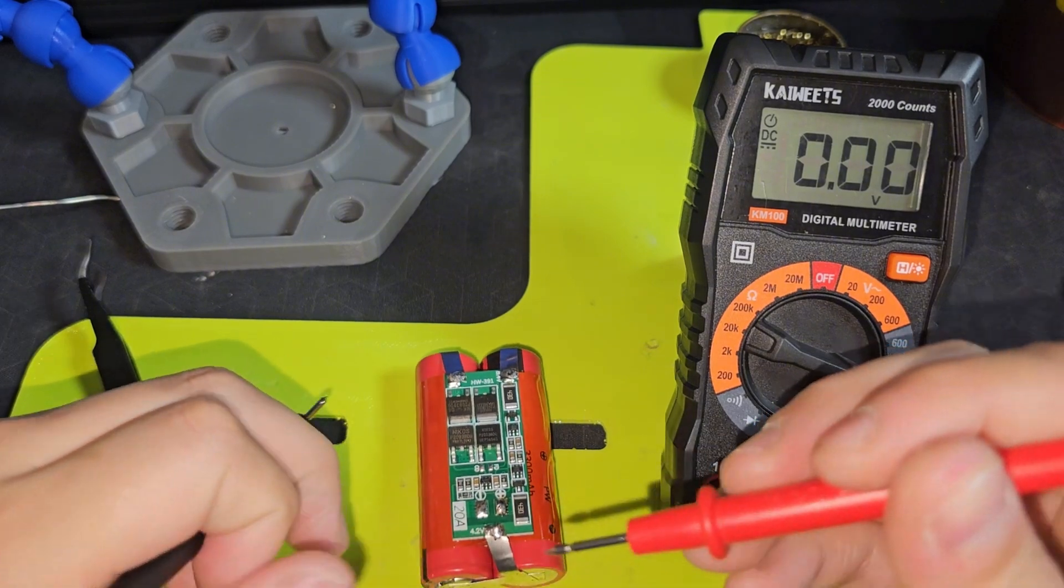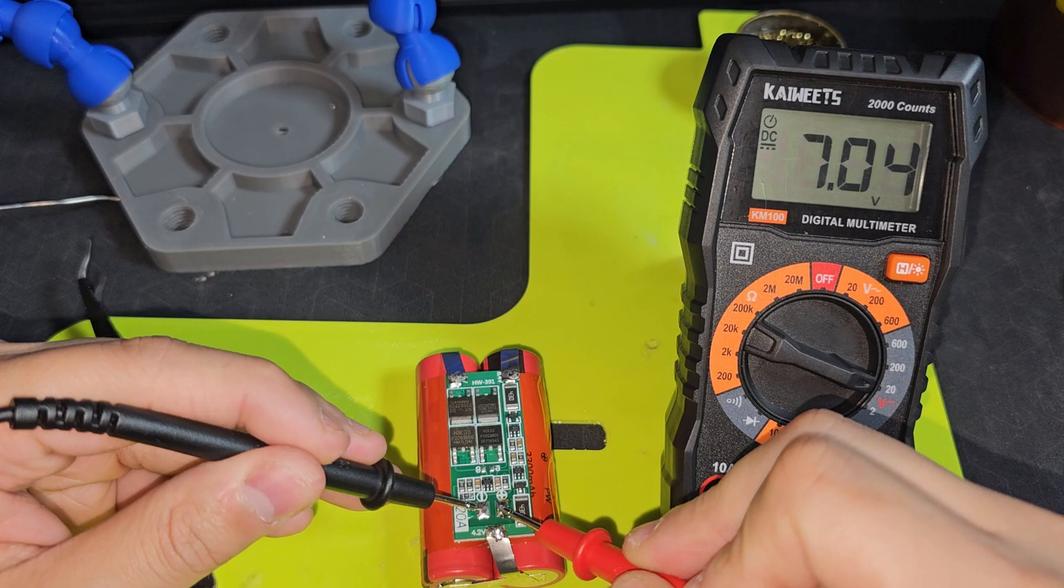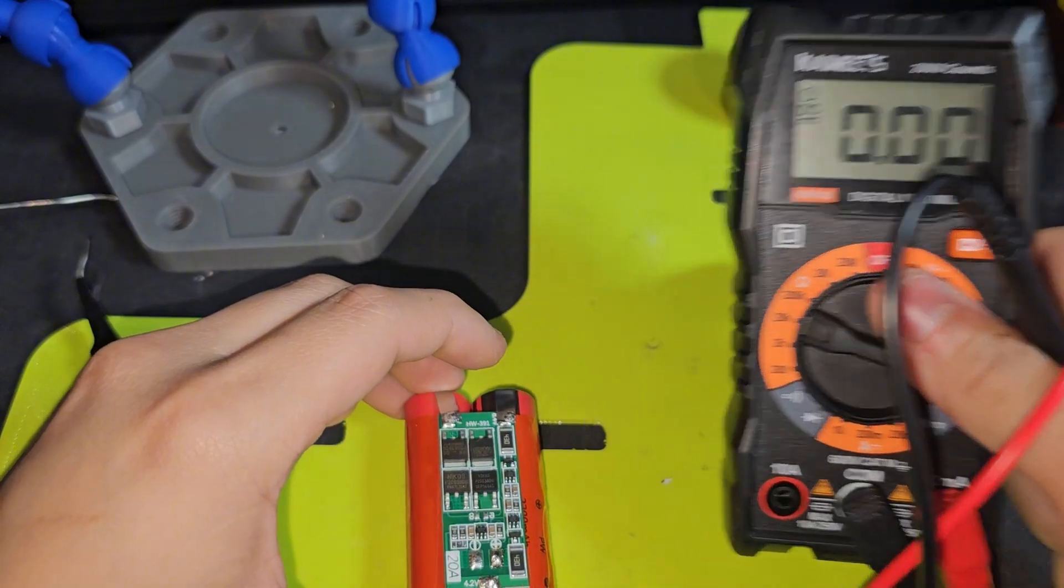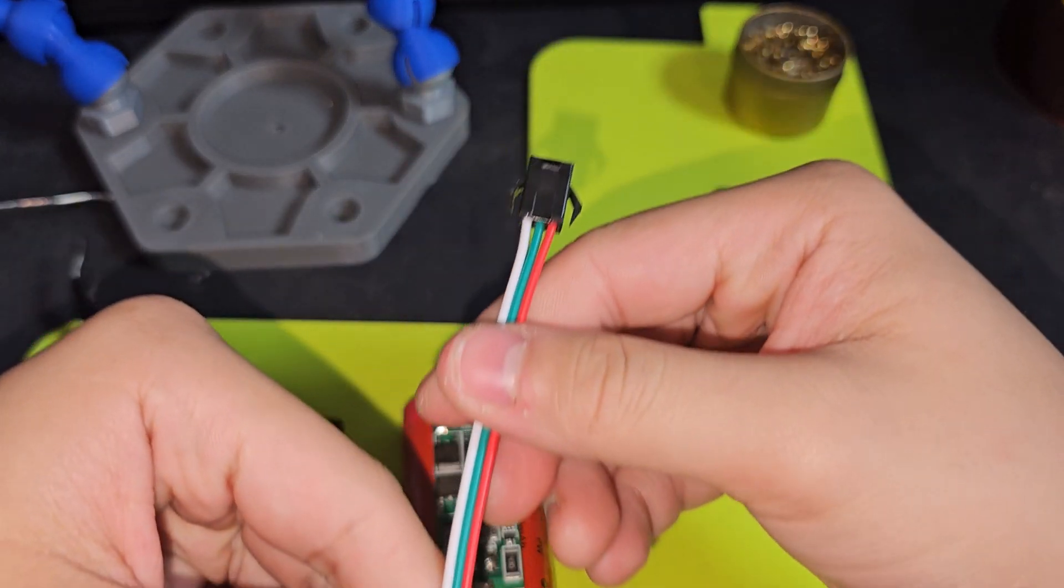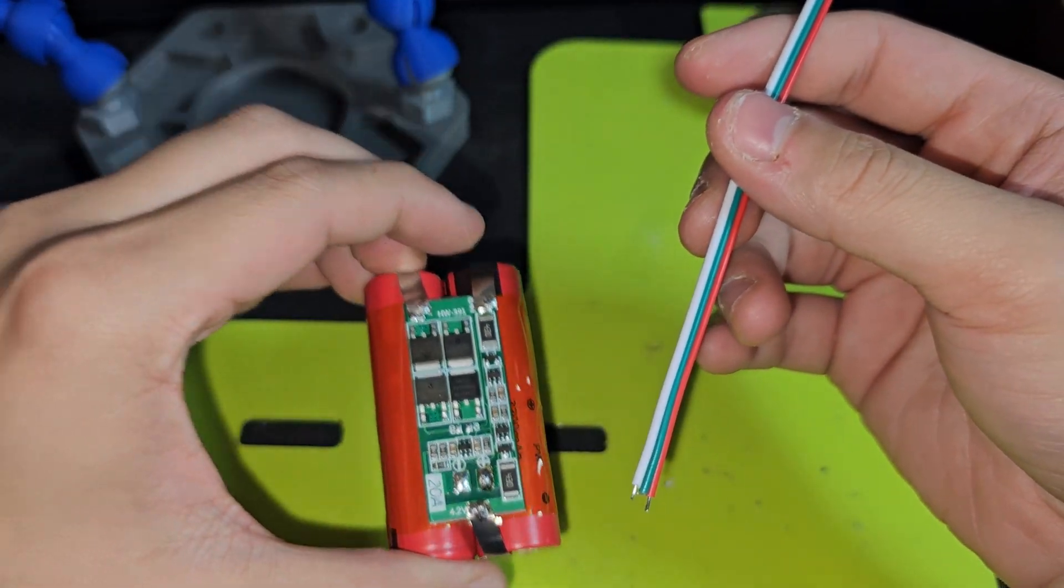And now, I can check the positive and negative of this thing, and 7.04V. Everything is connected perfectly, and now, it's on to the final step. I can go ahead and connect this to the BMS board, and we are basically finished.